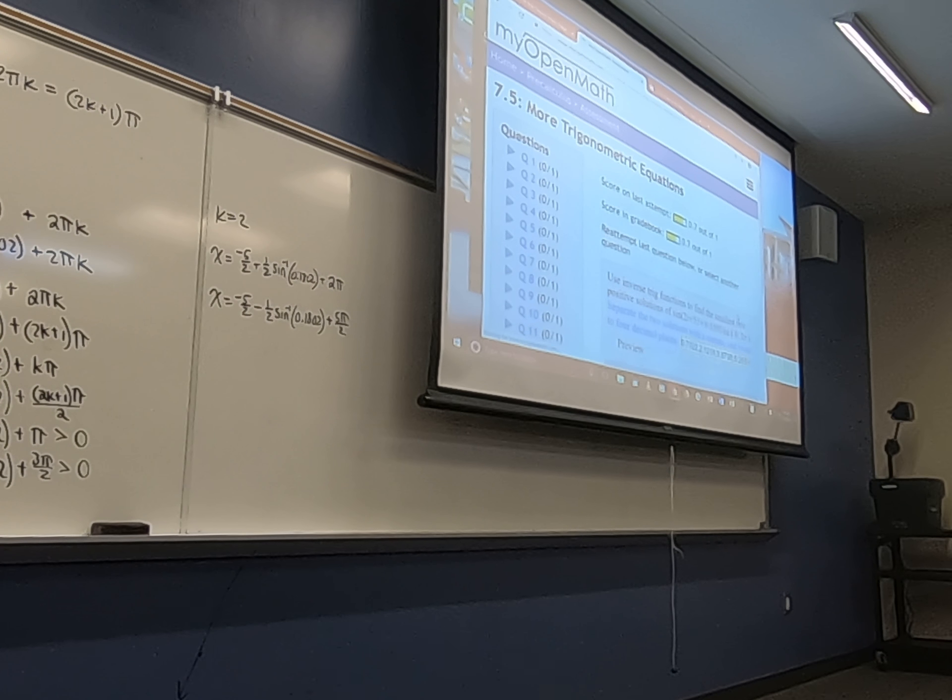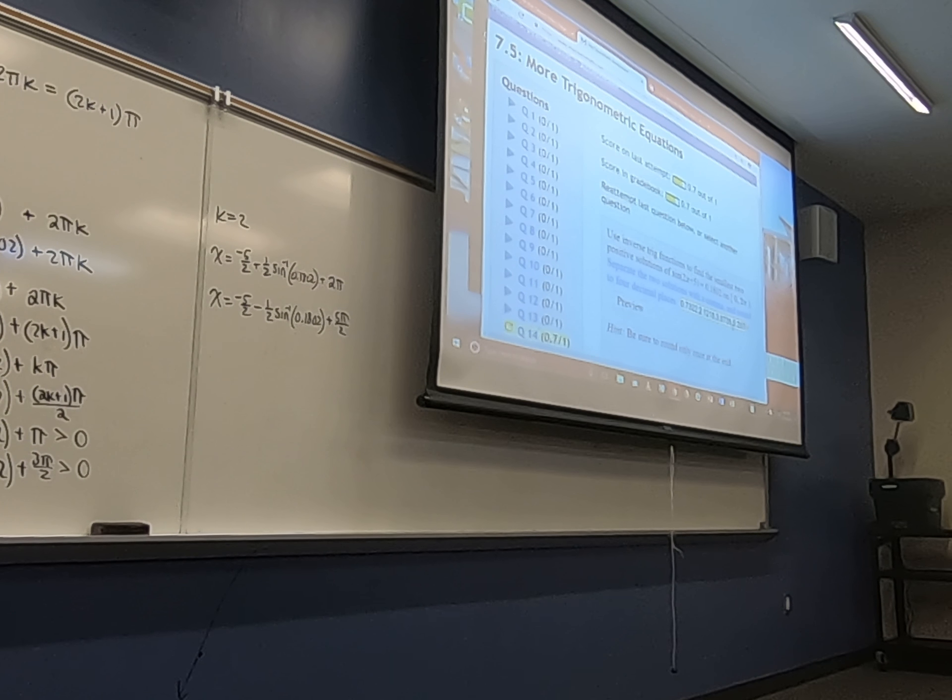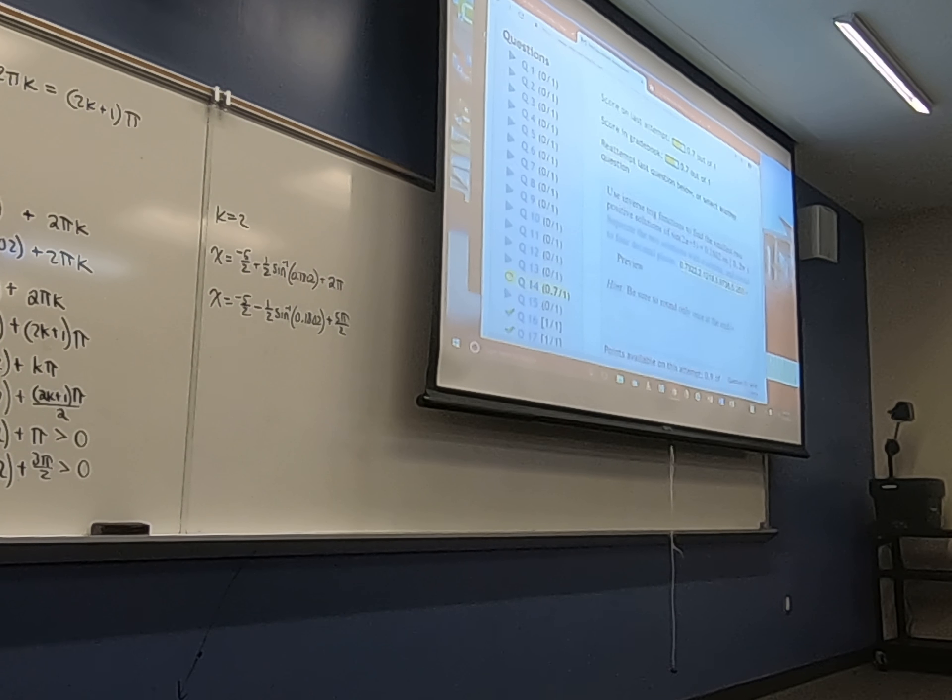This is not going to be right. Oh yeah, I missed something. 0.7 out of 1. But that's pretty good. I'm kind of happy. I went with myopenmath.com.